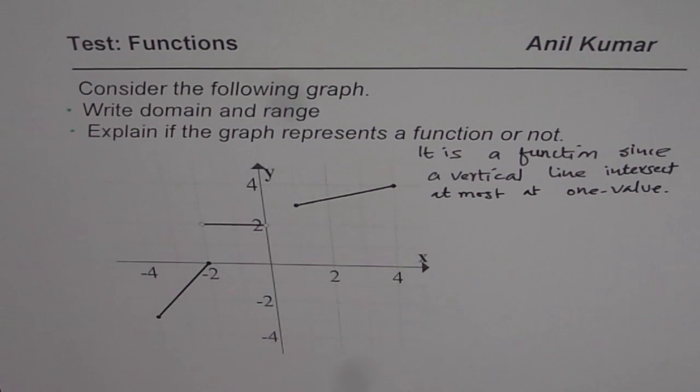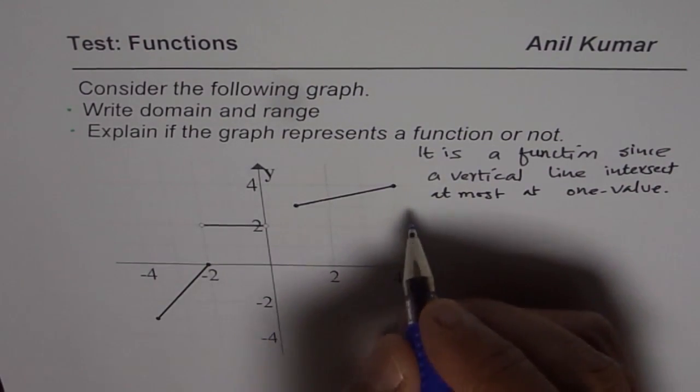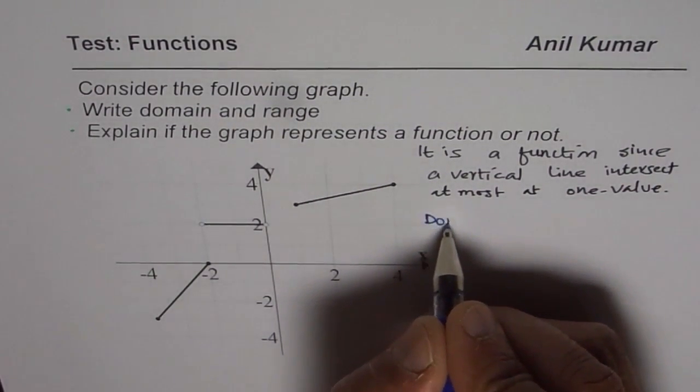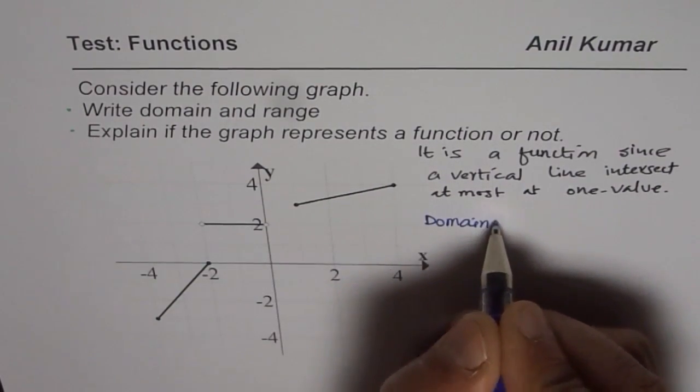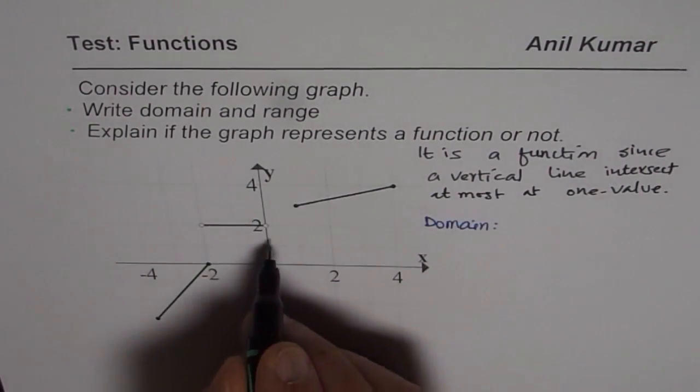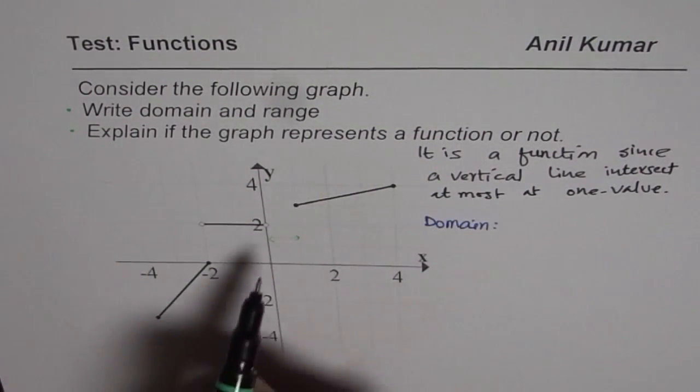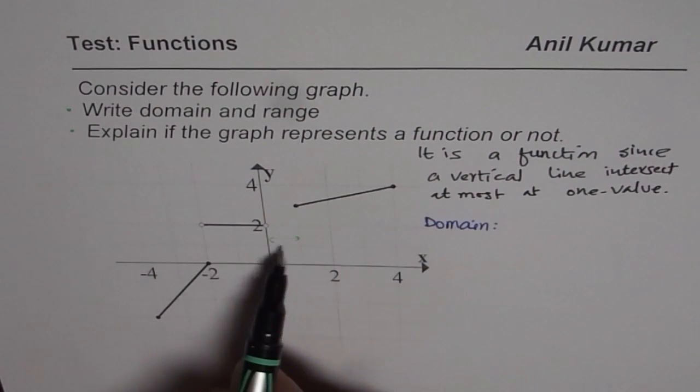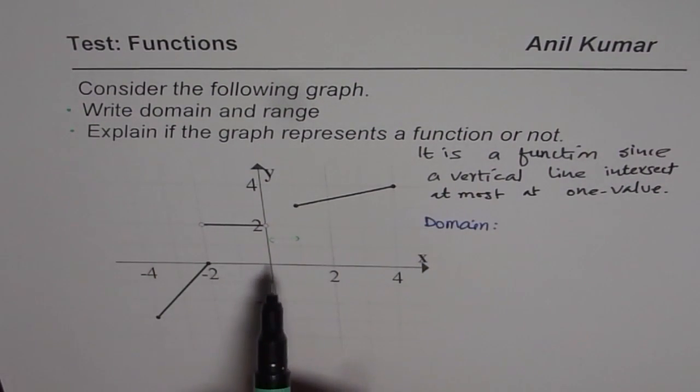Now, let me get back to part 1, writing domain and range. So what do you think is the domain of this function? Domain is all x values. You will notice that there is a gap here. Do you see that gap? And that means you need to write this as a combination of two intervals.